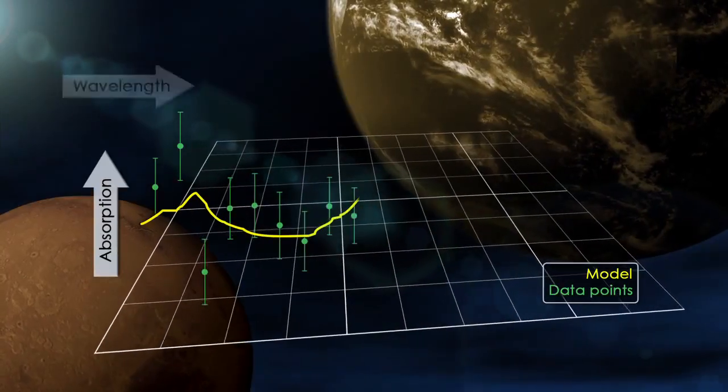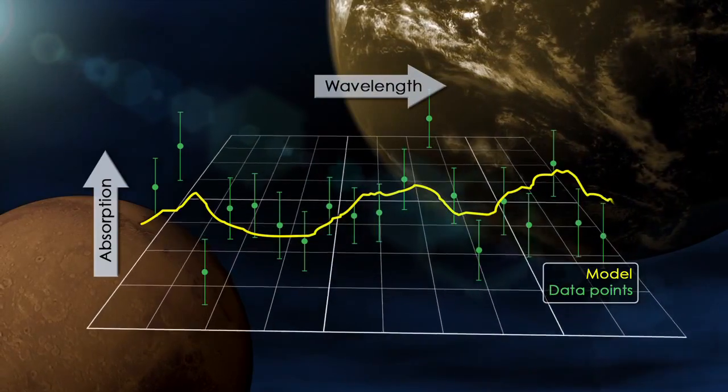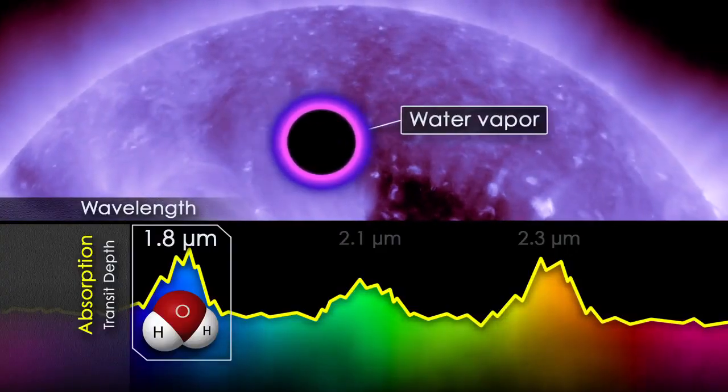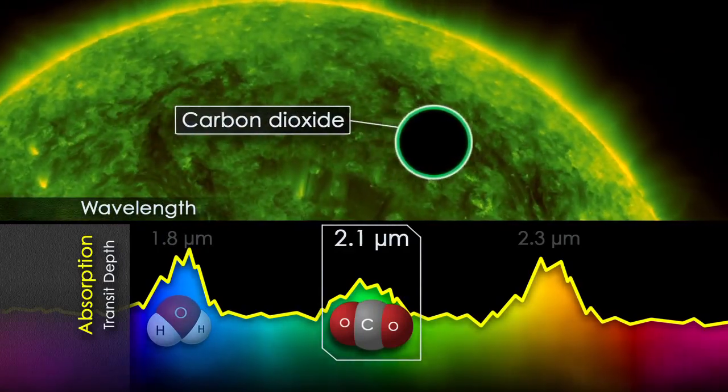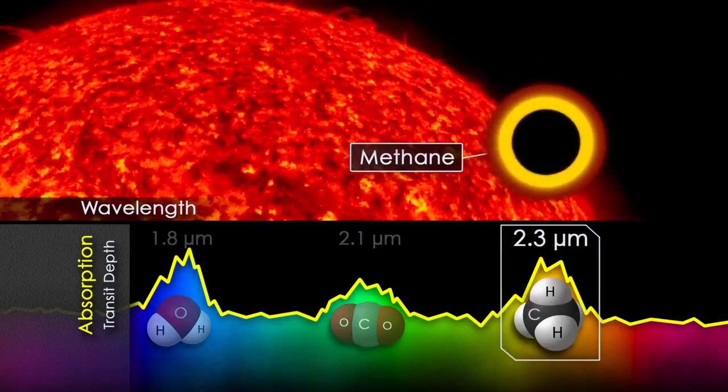Measuring the depth of absorption at each wavelength gives astronomers the planet's transit depth curve, which allows them to model the composition, height, and density of the atmosphere, providing a detailed picture of the planet.